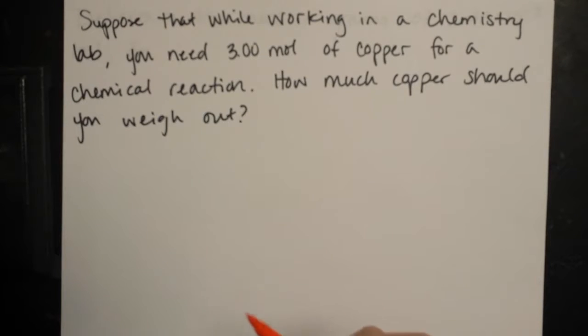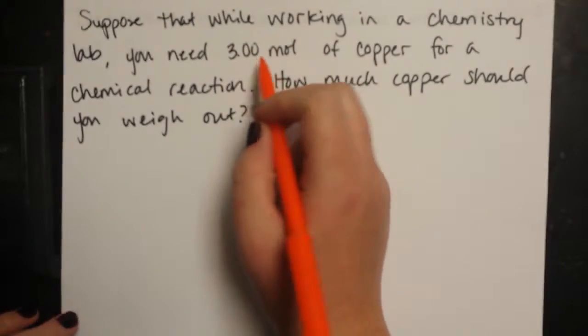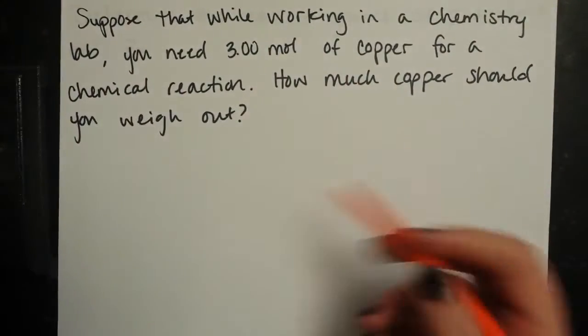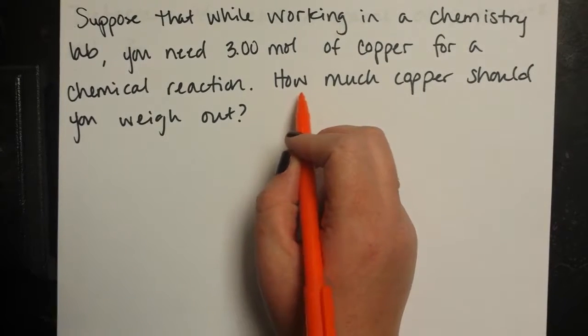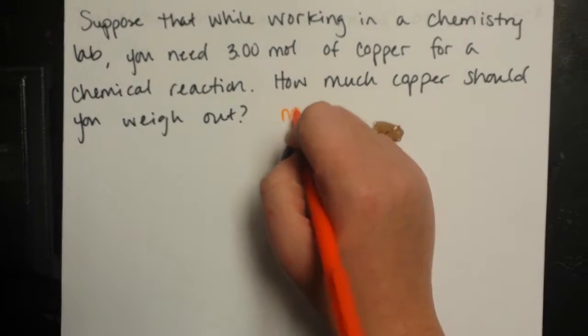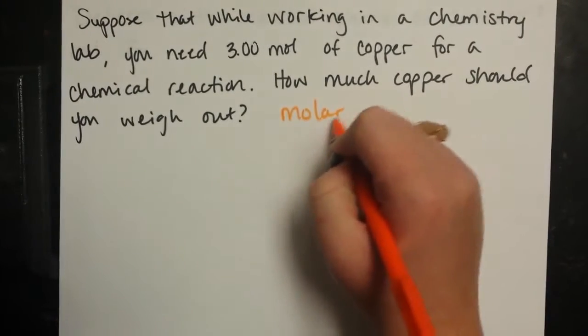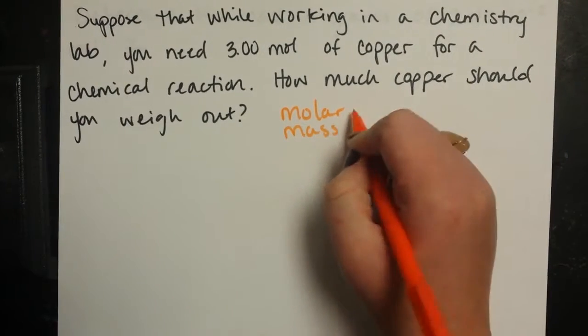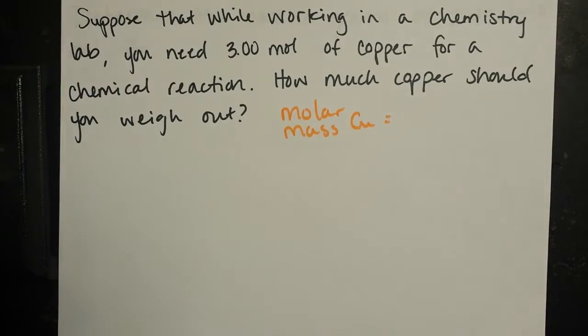Well, since we can't count out specific numbers of copper atoms, let alone three times Avogadro's number worth of copper atoms, it'd be much easier for us to weigh it out. And we know the molar mass of copper from the periodic table.